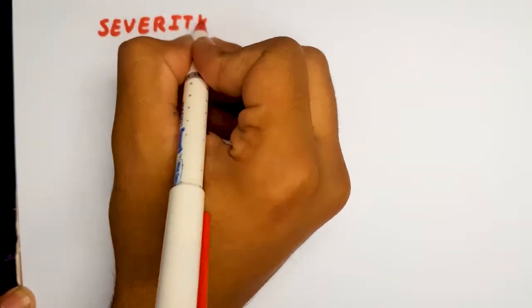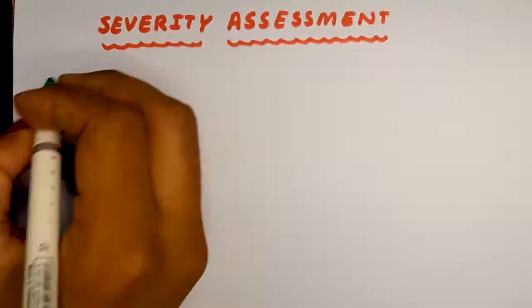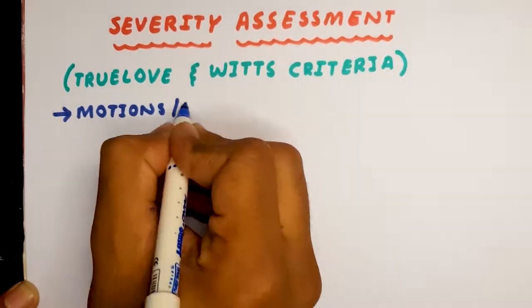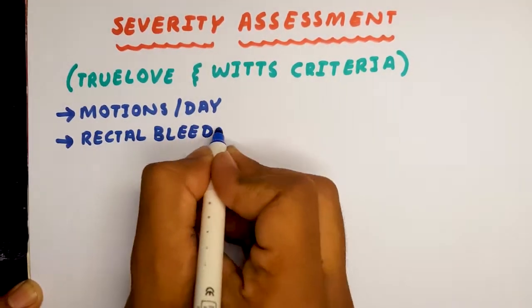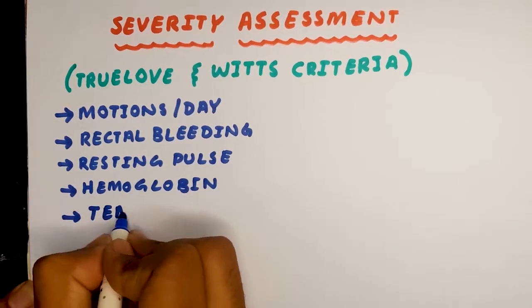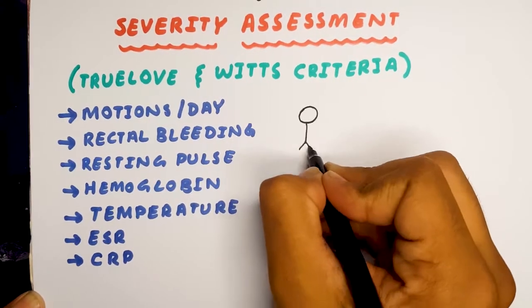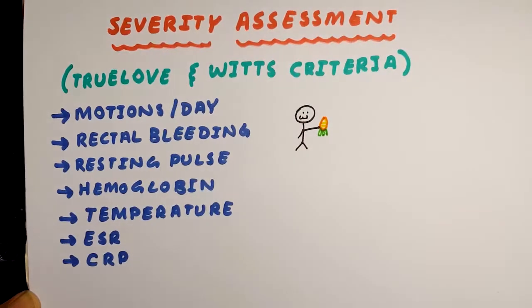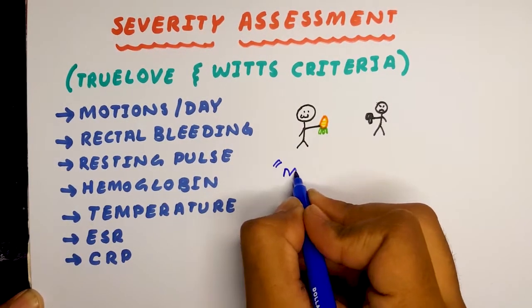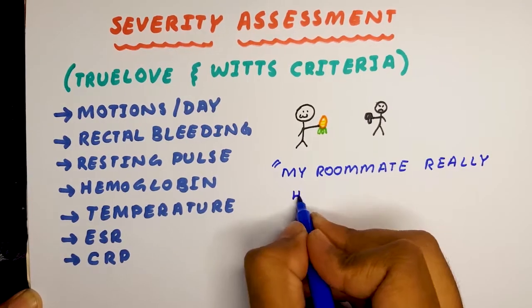When assessing the disease, we use the Truelove and Witts criteria. The headings are motions per day, rectal bleeding, resting pulse, hemoglobin, temperature, ESR, and CRP. How I like to remember it is that I imagine Truelove and Witts used to be roommates, and Truelove used to say that Witts has ulcerative colitis, which is why my roommate really hates to eat corn.